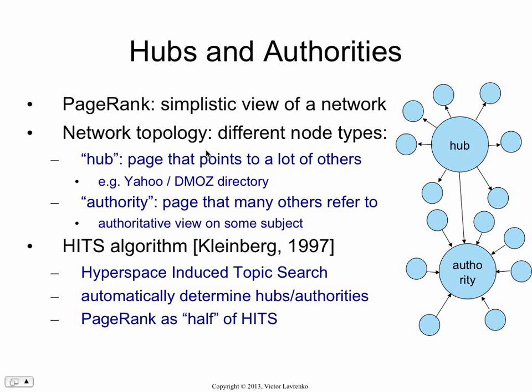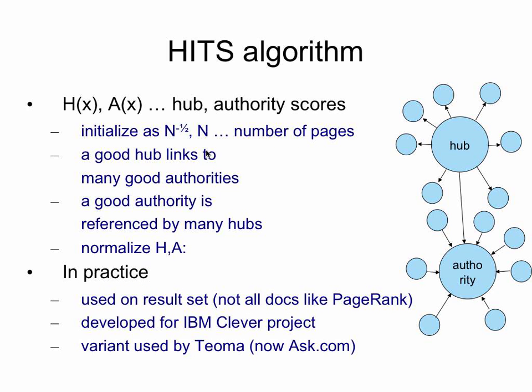Kleinberg, in 1997 — a year before PageRank — introduced the HITS algorithm, which basically estimates the hub and authority scores from a graph. If you're trying to think about how this relates to PageRank, PageRank is basically almost like a half of HITS. Which half? It's the authority half. PageRank measures how things inlink to you in a certain way, and that's what the authority part of HITS does as well.